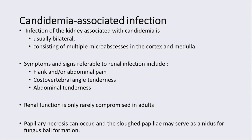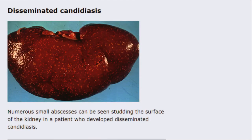Candidemia-associated infection is usually bilateral and consists of multiple micro-abscesses in the cortex and medulla. The patient presents with flank and/or abdominal pain, renal angle tenderness, and abdominal tenderness as well. Renal function is only rarely compromised in adults. Papillary necrosis can occur and the sloughed papillae may serve as a nidus for fungus ball formation. This photograph of a kidney shows numerous micro-abscesses scattered all over the surface.